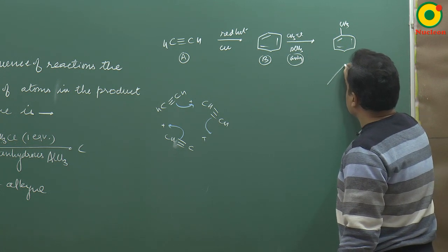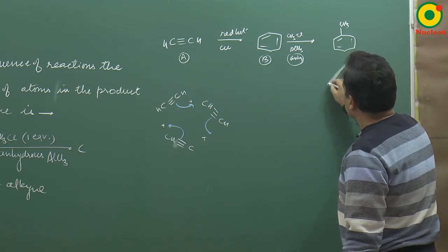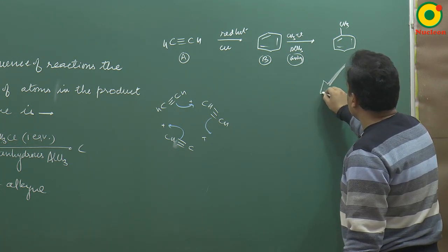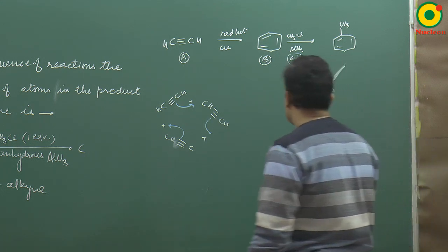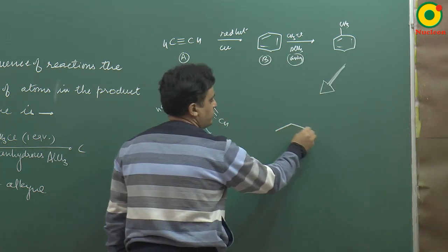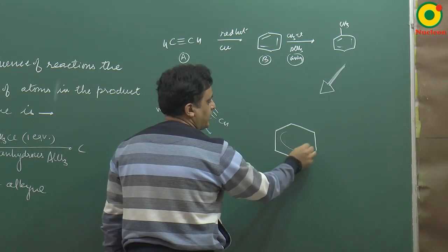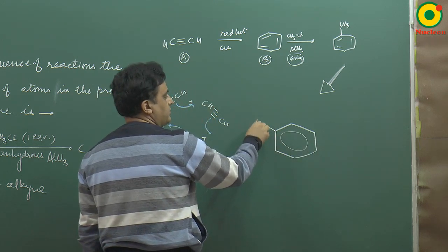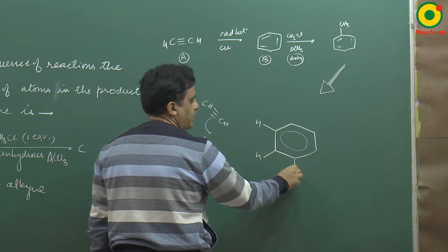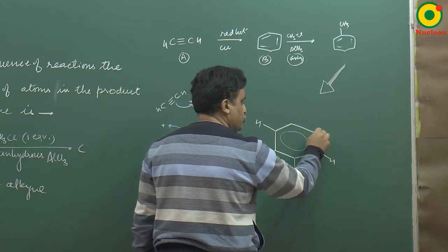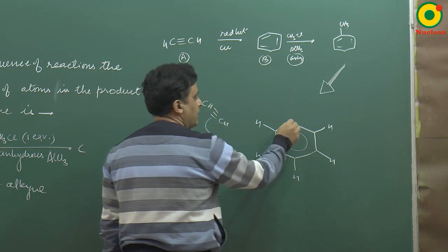This is the structure. Look at this. I will make it like this. This is benzene. The benzene ring is in one plane—all atoms in the benzene are in the same plane. Here is the carbon.